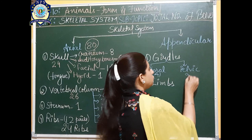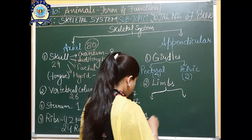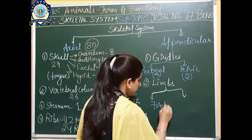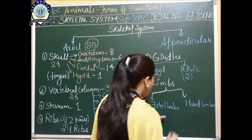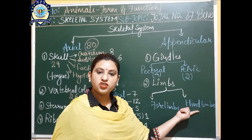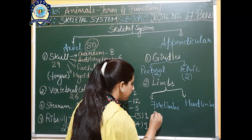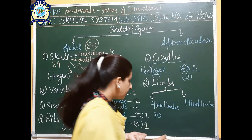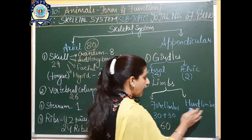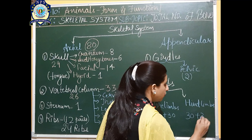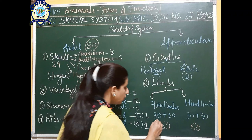Sacral is the pelvic/hip region — 5 bones. Caudal is the tail region — 4 bones. In the sacral region, the 5 bones fuse together to form one. In the caudal region, the 4 bones fuse together to form one. So the vertebral column effectively has 26 bones. Sternum, also called the chest bone, is 1 in number. Ribs are 12 pairs, so 24 ribs in total.